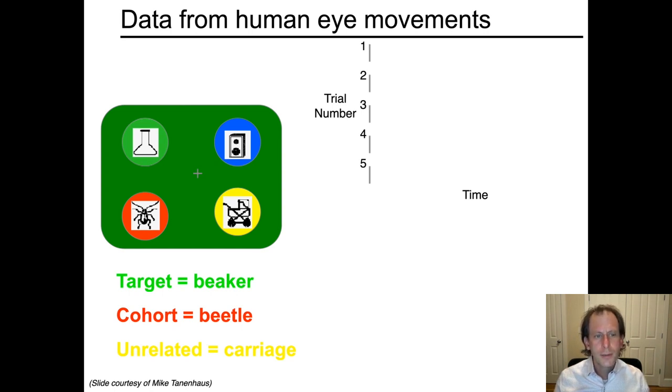So this is an experimental setup where I'm sort of schematizing what would be in the visual screen here. There are four objects. This was done in the 1990s, so it's a very low-tech display. There's a beaker in the upper left, a speaker in the upper right, a beetle in the lower left, and a carriage in the lower right. And so notice that there is sort of a sound relationship between the beaker, the speaker, and the beetle.